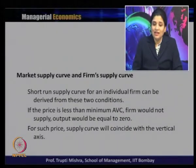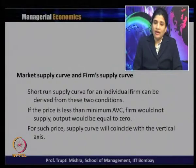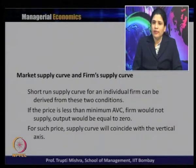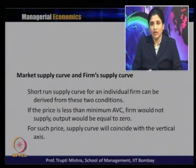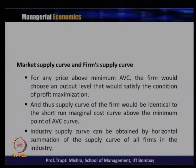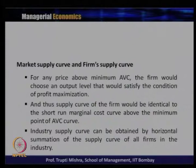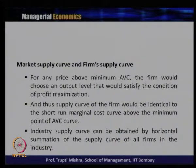The short-run supply curve for any individual firm is derived from these two conditions. If price is less than minimum of AVC, the firm will not supply — output equals zero — and the supply curve coincides with the vertical axis. For any price above minimum of AVC, the firm chooses output satisfying the profit maximization condition, so the firm's supply curve is identical to the short-run marginal cost curve above the minimum point of AVC.